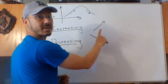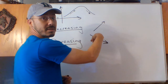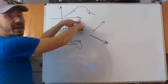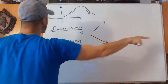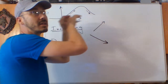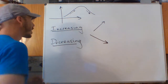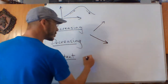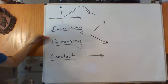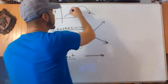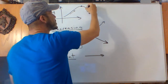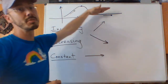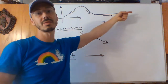Going down to the left is actually increasing, because going down to the left means going up to the right — we're reading left to right. Functions can also be constant, meaning going straight to the right. So a function might increase, then decrease, then go constant.